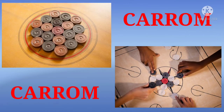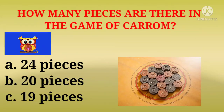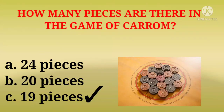Second game is carrom. How many pieces are there in the game of carrom? Karam ke khel mein kitne ghotiyaan hoti hai? Options are 24 pieces, 20 pieces, or 19 pieces. Answer is 19 pieces without the striker.